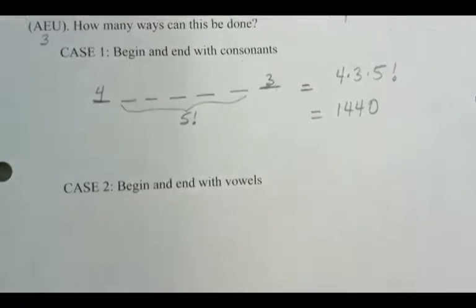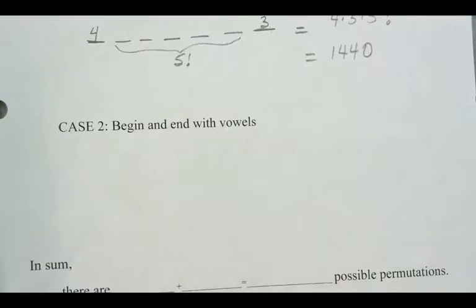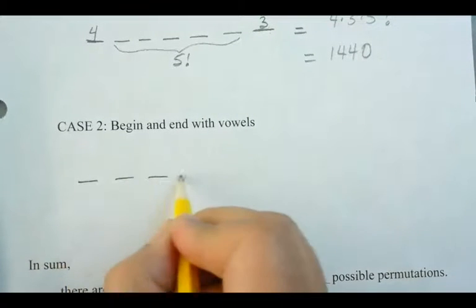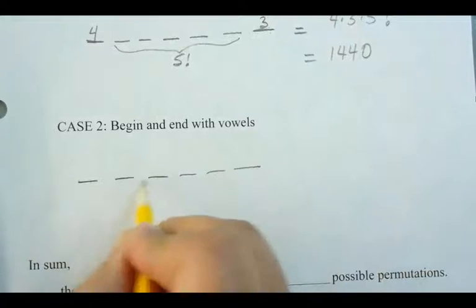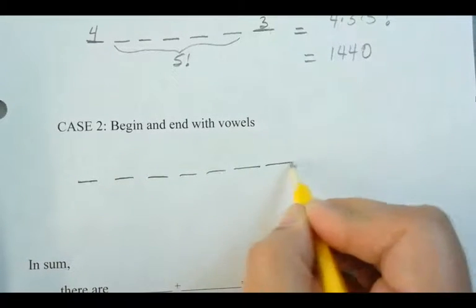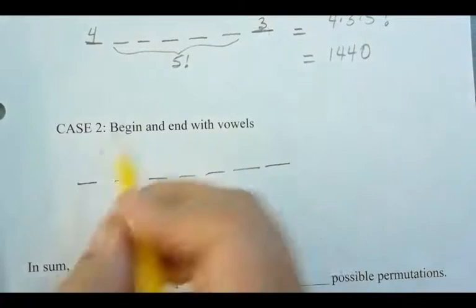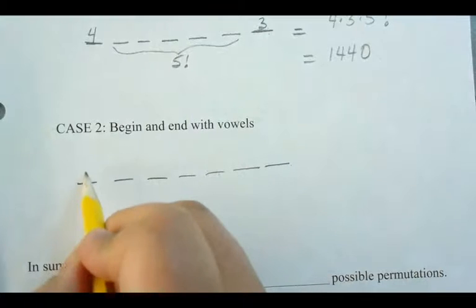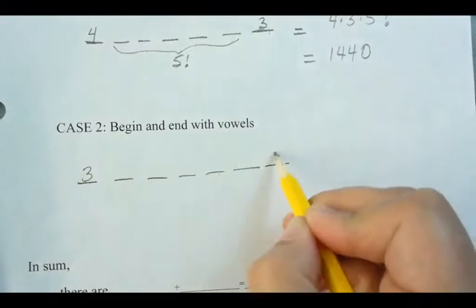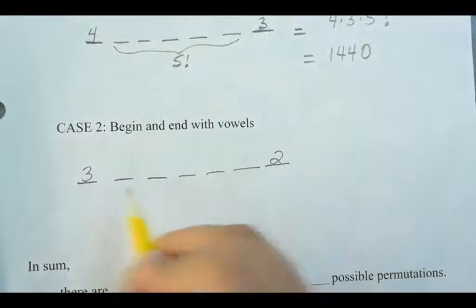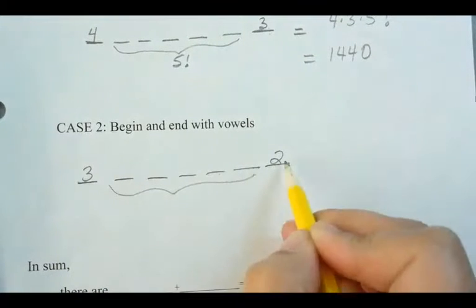Now, next, we're going to look at how many different ways is it going to look if we begin and end with vowels. So if I begin with a vowel, I still have one, two, three, four, five, six, seven different spots. How many different ways can I put a vowel here? Three. And how many? Two ways for the end vowel, right? Because there's two vowels left.